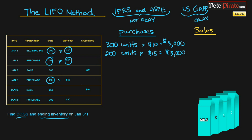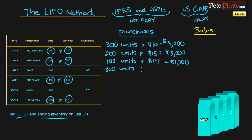We disregard the sale entry. Then 100 units times $17 equals $1,700, and finally 300 units times $20 equals $6,000. In total, that gives us $13,700 for our inventory value, and of course we have 900 units.